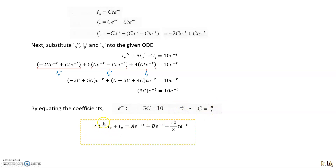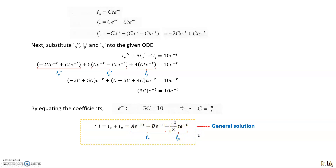Substituting C = 10/3 back, the particular integral is ip = (10/3)·t·e^(−t). The general solution is I = ic + ip = A·e^(−4t) + B·e^(−t) + (10/3)·t·e^(−t). This is the general solution for the ODE.